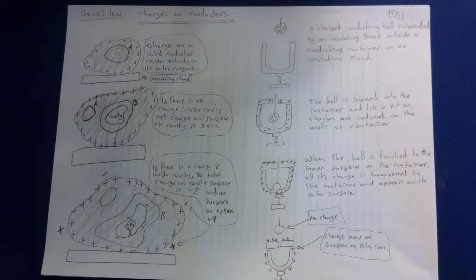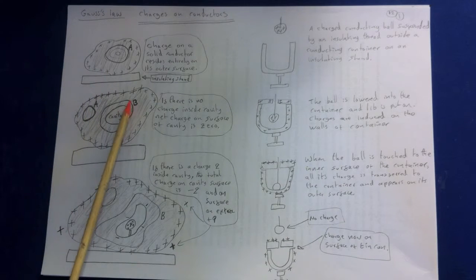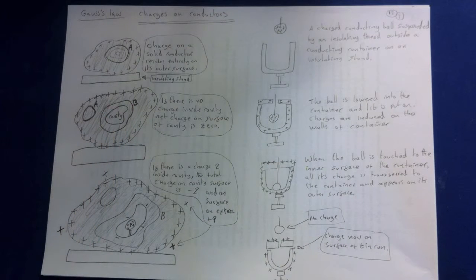We assume the conductor is mounted on an insulating stand. Now, if there is a hollow cavity inside the solid conductor, then a surrounding Gaussian surface B, as shown, will have zero charges. And so for its surface, the electric field is zero.